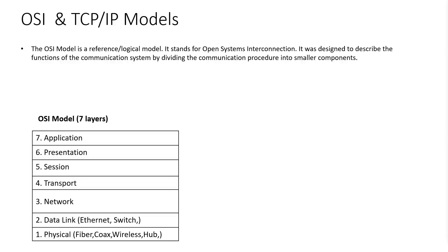As we can see in this table, the OSI model is a seven-layer model. We have application layer, presentation layer, session layer, transport layer, network layer, data link layer, and the last one, physical layer.